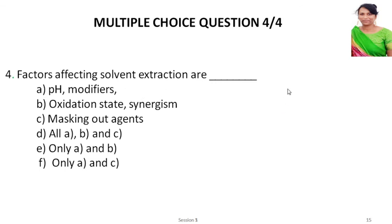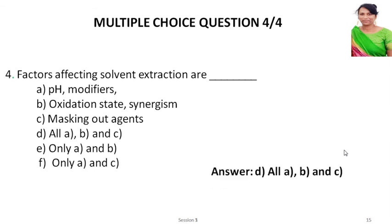Last question: Factors affecting solvent extraction are — A: pH and modifiers; B: oxidation state and synergism; C: masking out agents; D: all of A, B, and C; E: only A and B; F: only A and C. The answer is D — all of A, B, and C, since we have seen all of these factors.